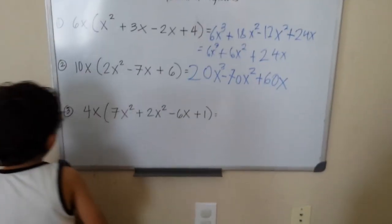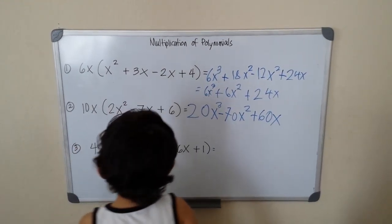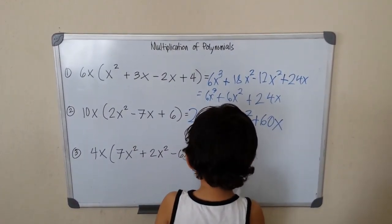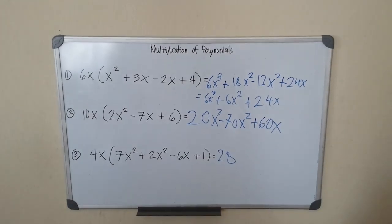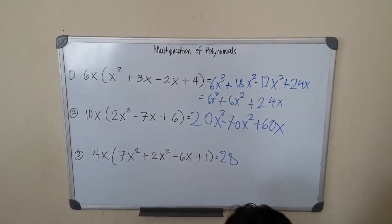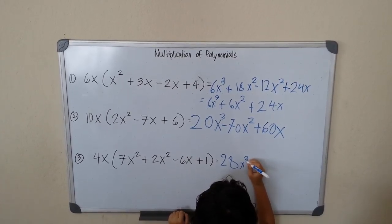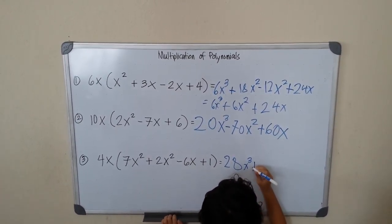And number 3, let's see if we can combine. So 4 times 7, this is our dynamic. So 4 times 7 is 28, 28x cubed.